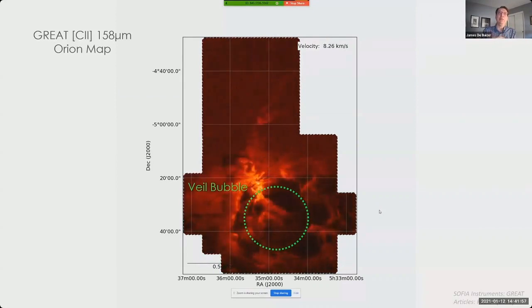And as this movie plays, one thing becomes clear when we look down to the south region in a region known as the Veil Bubble: the bubble is expanding. Now interior to this bubble, and not seen in this data, lies a massive O-star that can be seen in visible light named Theta-1 Orionis C. And its strong stellar winds have swept up the material into the shell that we see in the Veil Bubble.